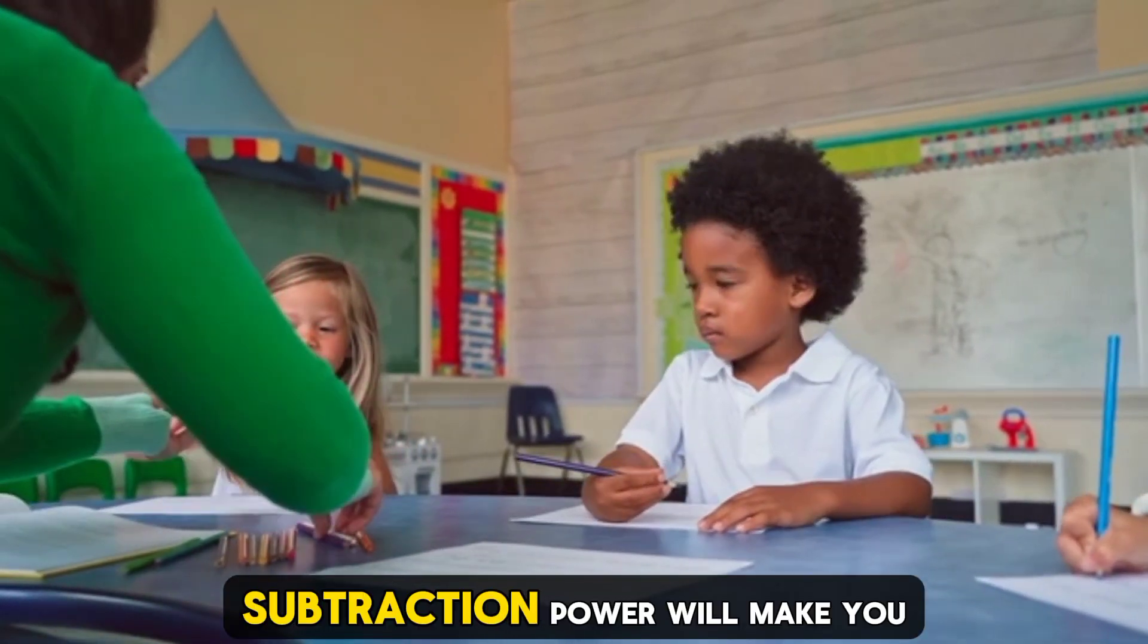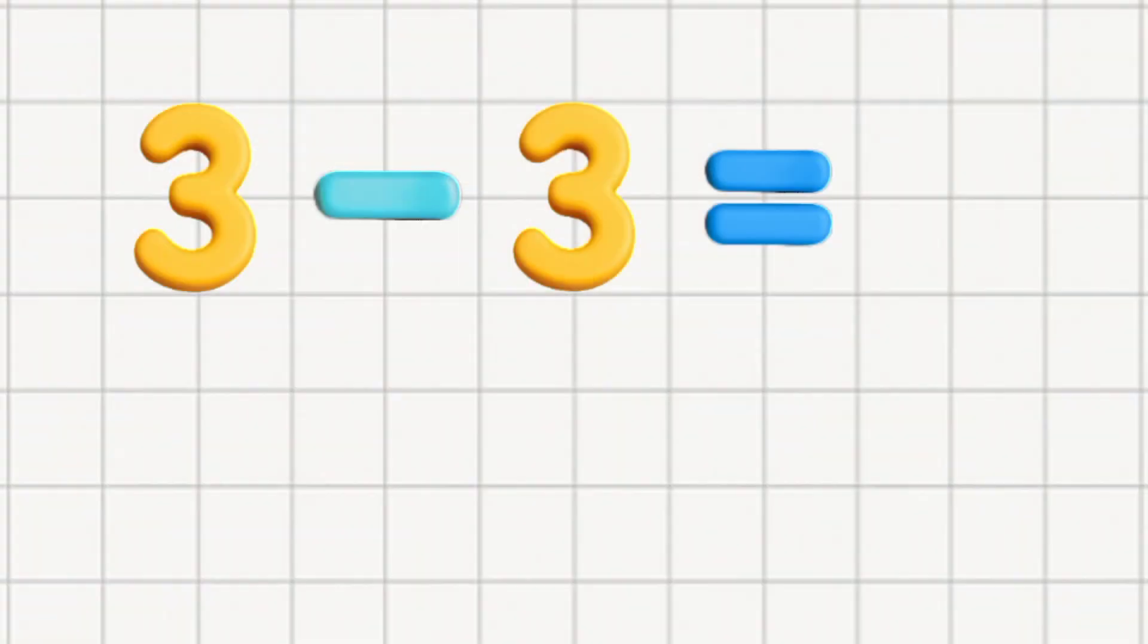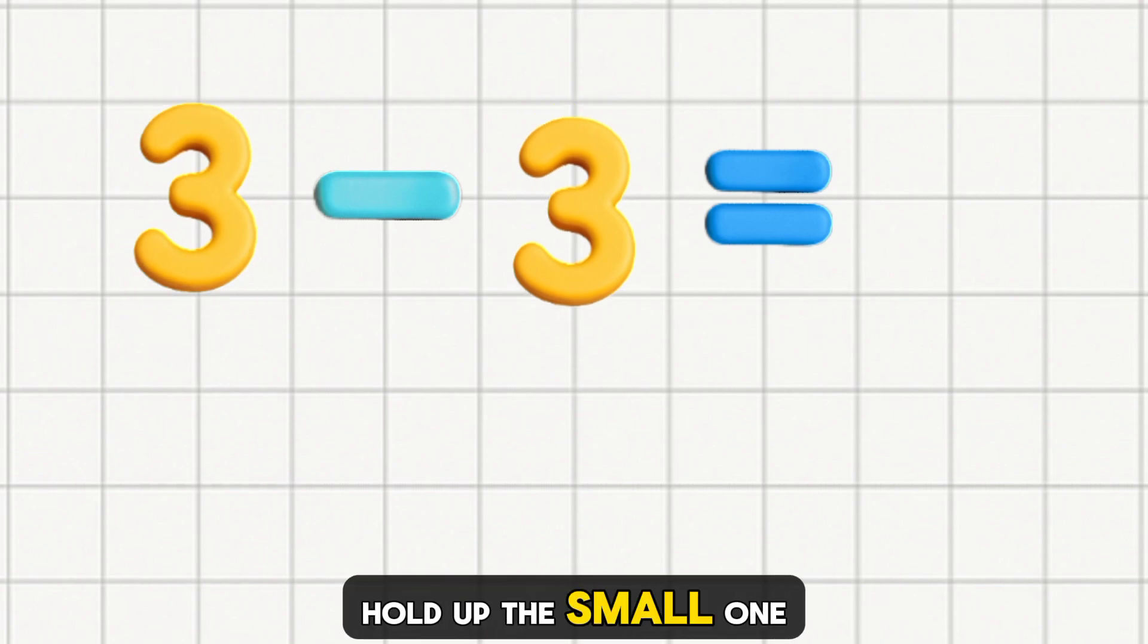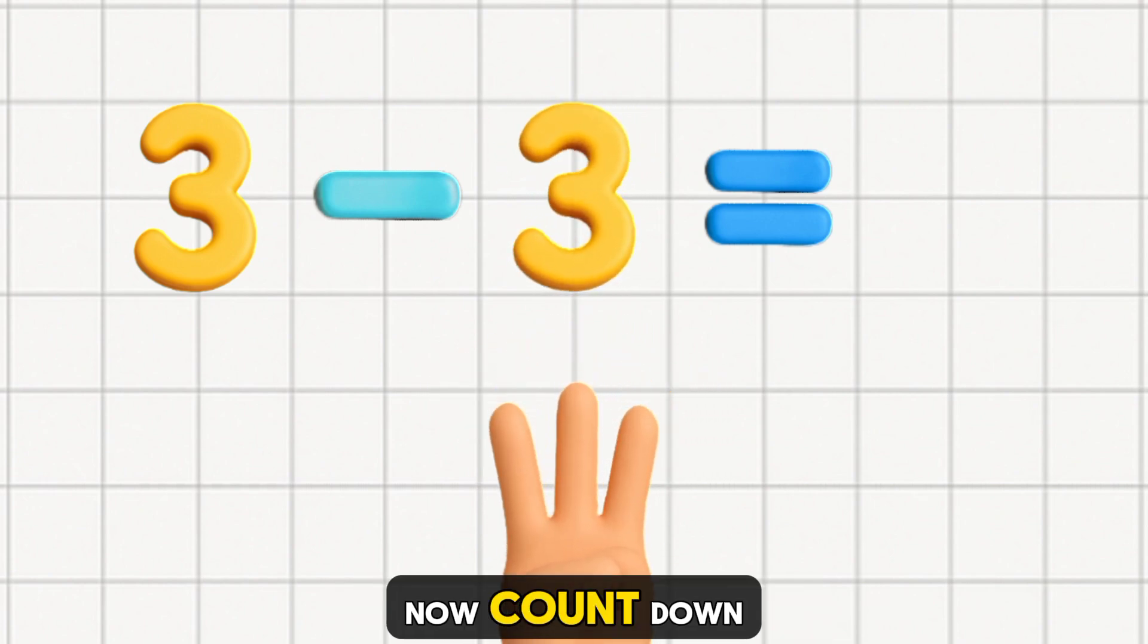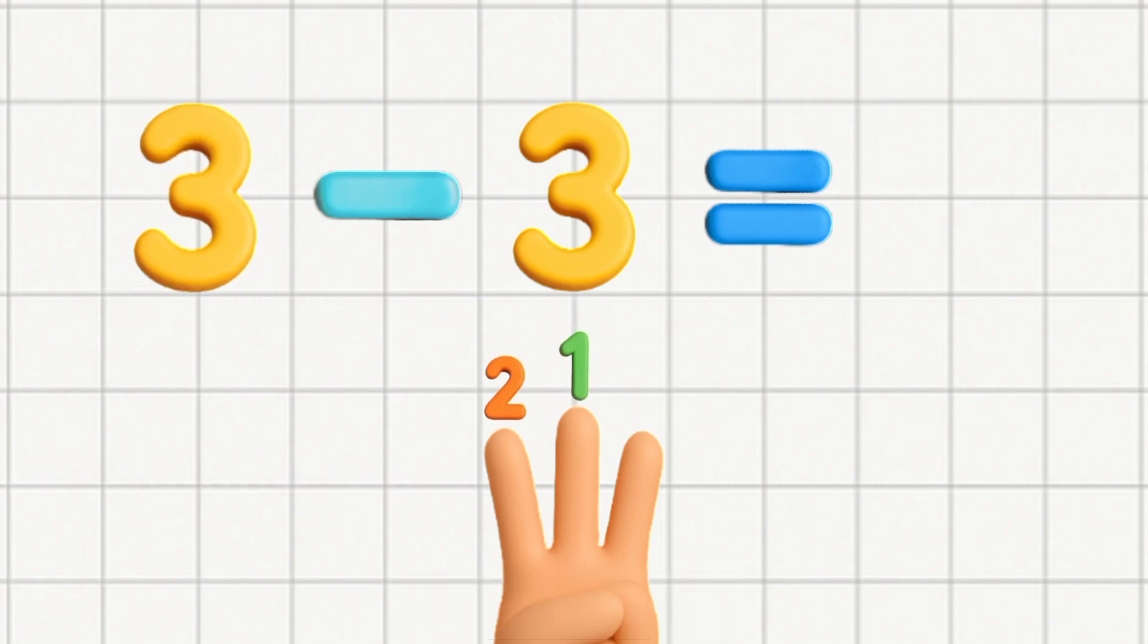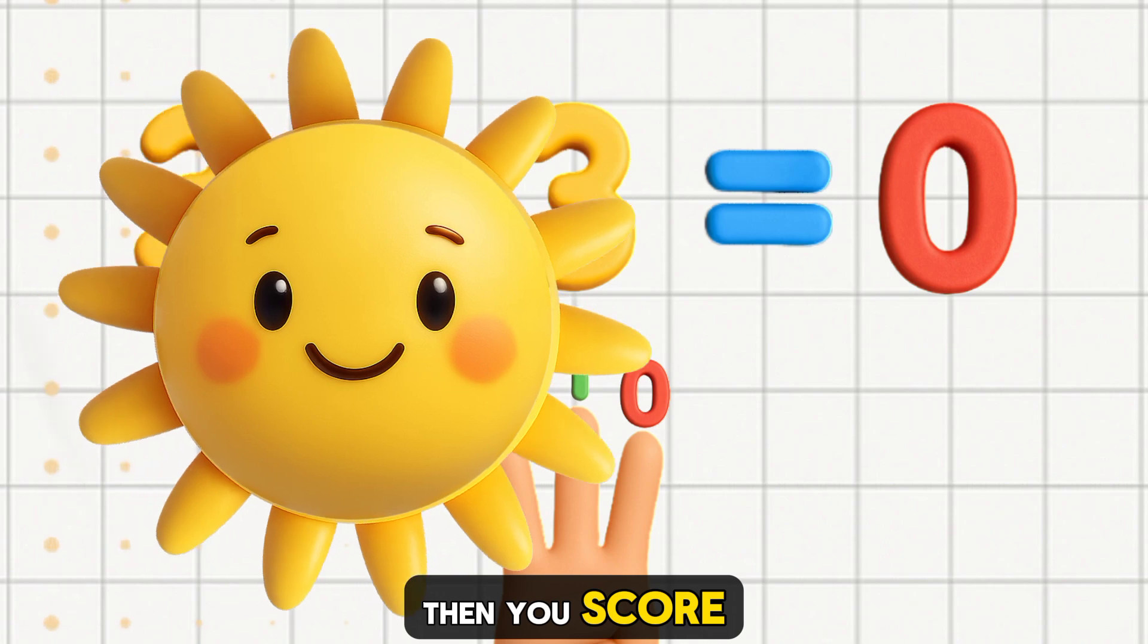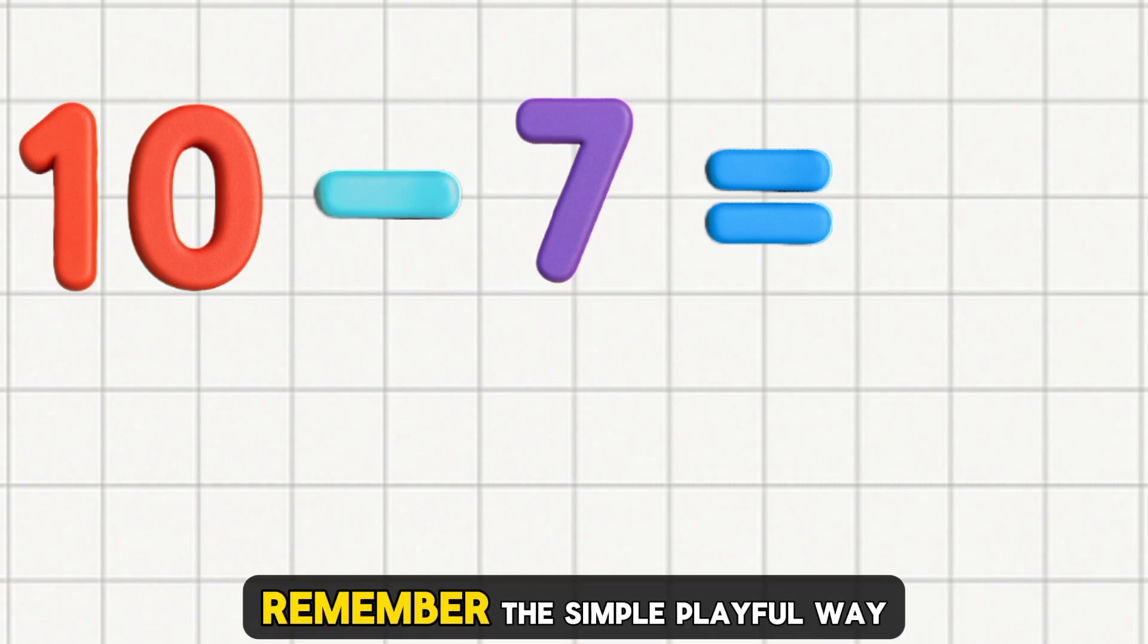Don't be shy, you're doing great. Subtraction power will make you ace. Start with the big one, keep it in your head. Hold up the small one on your fingers instead. Now count down, just like before. Each finger means less and then you score. So when it's time to take away, remember the